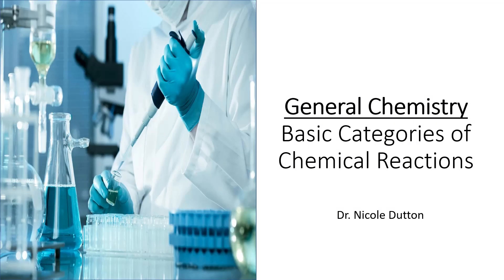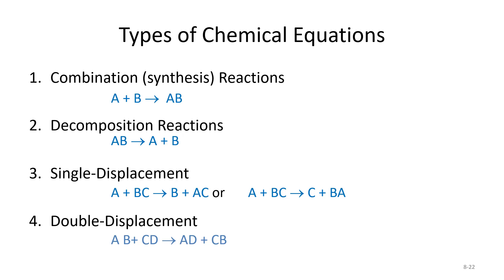There are four basic categories of chemical reactions, and then there are specific types within each one of these categories. We're going to go through the basic types today, and in future lectures we will go through more specific types. We have combination or synthesis reactions, decomposition reactions, single displacement, and double displacement.